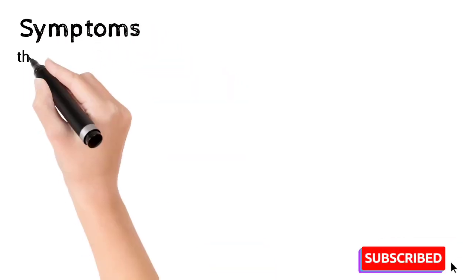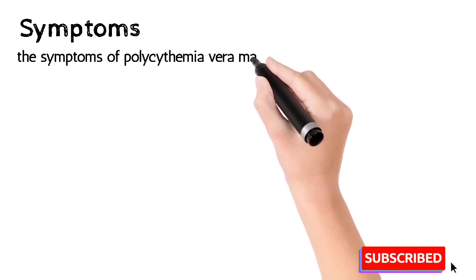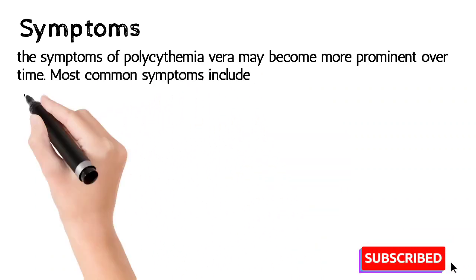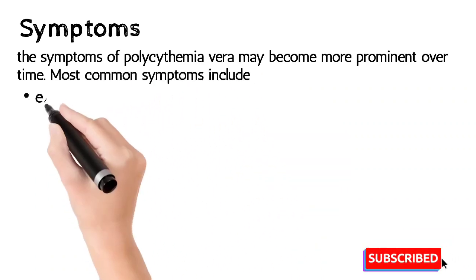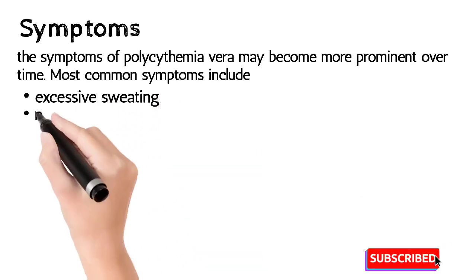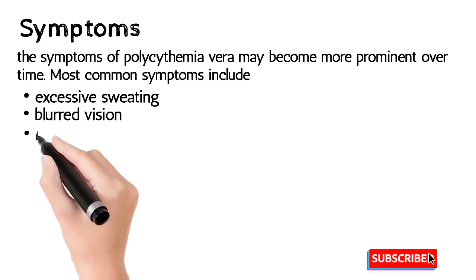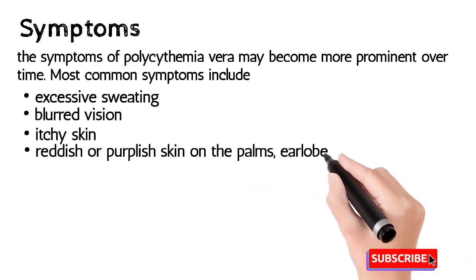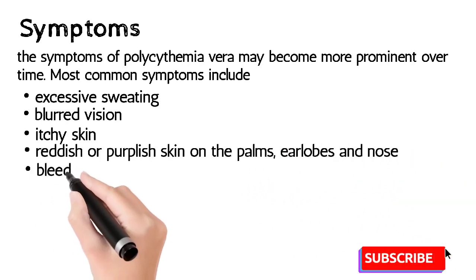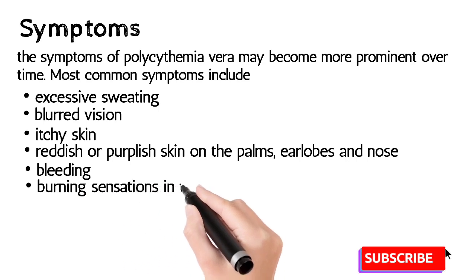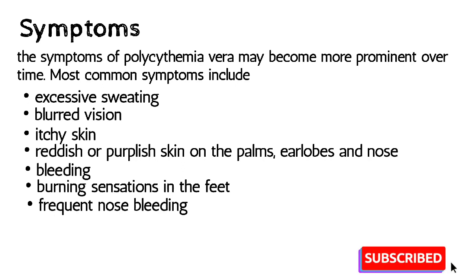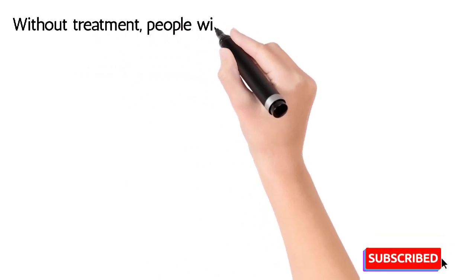The symptoms of polycythemia vera may become more prominent over time. The most common symptoms include excessive sweating, blurred vision, itchy skin, reddish or purplish skin on the palms, ear lobes, and nose, burning sensation in the feet, and frequent nosebleeds.